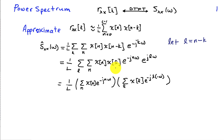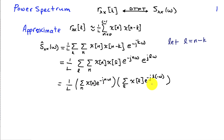At this point, we can group the terms involving the sum over l and the sum over n. We see that we have the sum over n of x of n times e to the minus j n omega — that's just the discrete time Fourier transform of x of n. And then we have the sum over l of x of l times e to the minus j l times minus omega, which is the discrete time Fourier transform of x of l evaluated at minus omega.